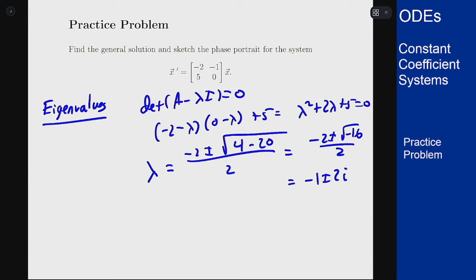With the outset we know this will be a spiral and will be a spiral sink because the real part of the eigenvalue is negative. But in order to find the general solution and actually sketch this we need the eigenvector.